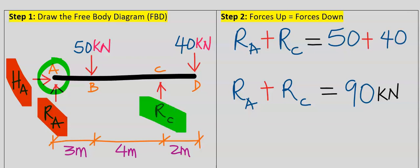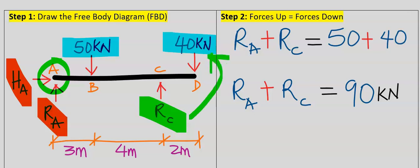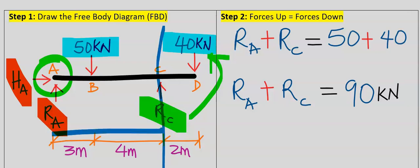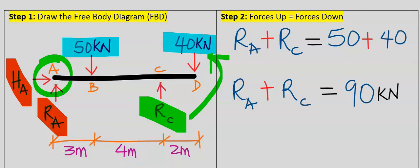Next, we consider the reaction at point C. In the absence of other forces, the reaction at point C will push the beam in the anticlockwise direction about point A. The distance from point C to point A is 7, so we have the reaction at C multiplied by 7 in the anticlockwise direction.